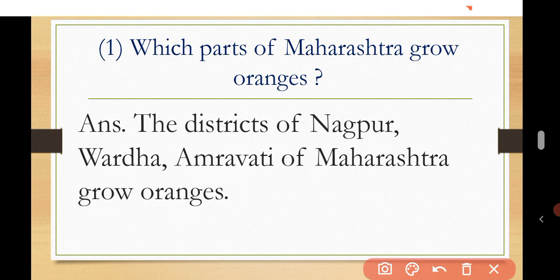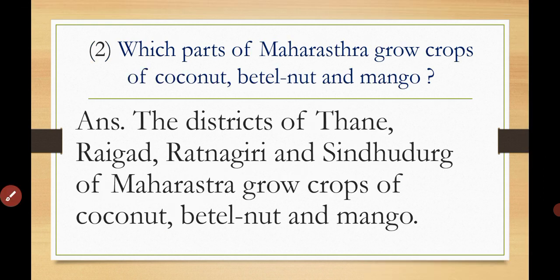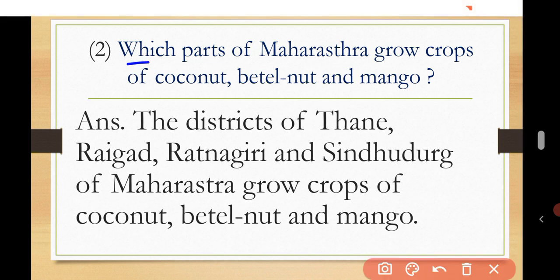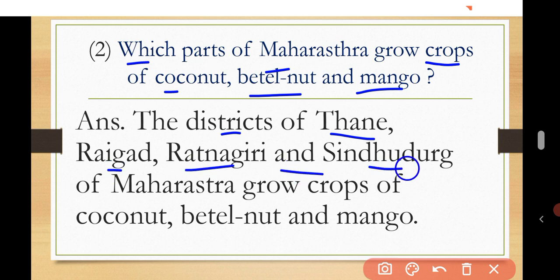Next question: which parts of Maharashtra grow crops of coconut, betel nut, and mango? The answer is: the districts of Thane, Raigad, Ratnagiri, and Sindhudurga of Maharashtra grow crops of coconut, betel nut, and mango. You can write this answer in your notebook.